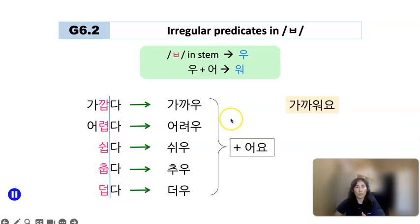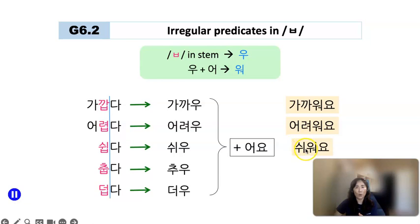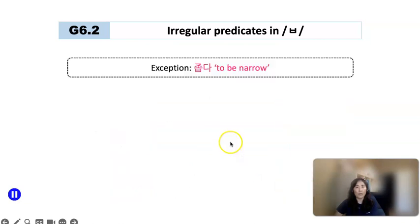So: 가깝다 → 가까워요 (to be close); 어렵다 → 어려워요 (to be difficult); 쉽다 → 쉬워요 (to be easy); 춥다 → 추워요 (to be cold); 덥다 → 더워요 (to be hot).